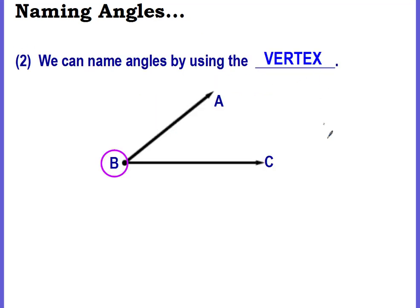We can also name angles by using the vertex alone. So you could say this is angle B. You don't have to use all three letters. You could just use the vertex to name the angle, angle B. Very simple.